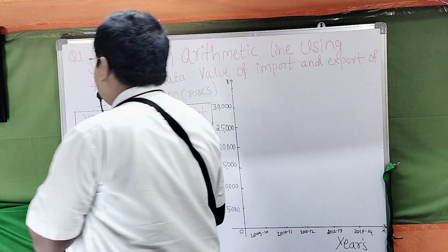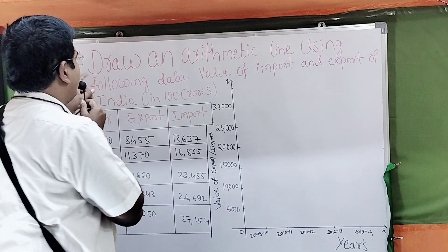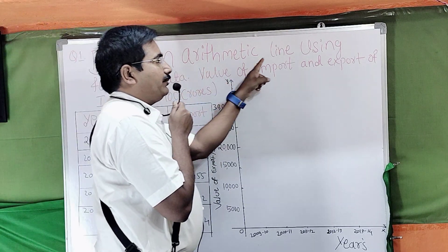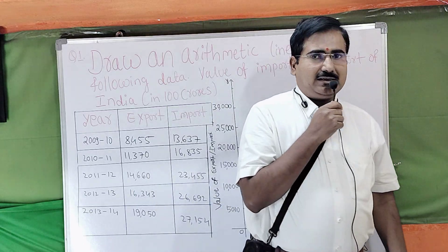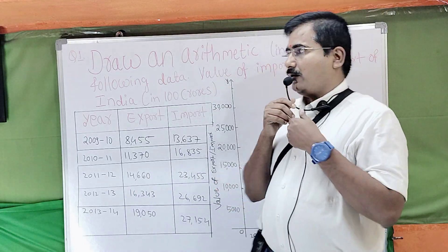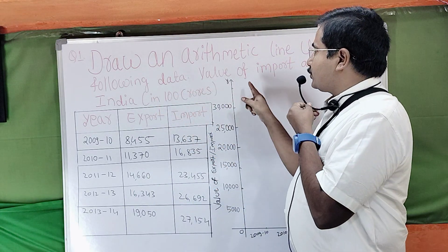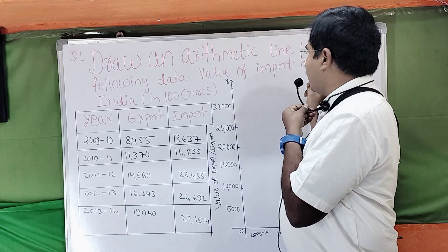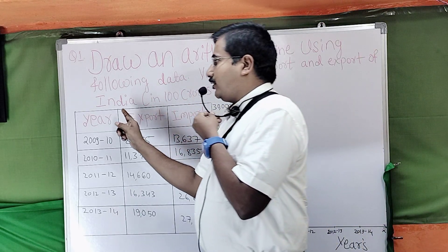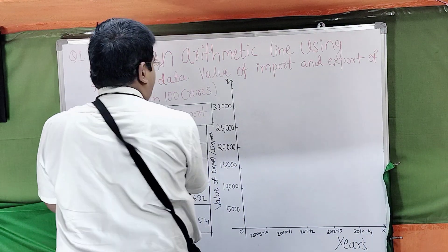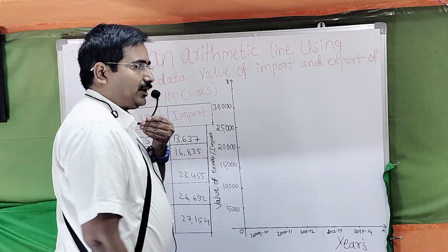First of all, we have taken the questions. First one: draw an arithmetic mean line using the following data — values of import and export of India in crores rupees.